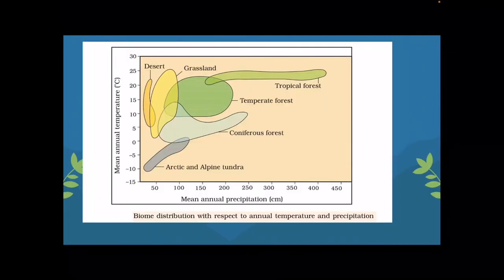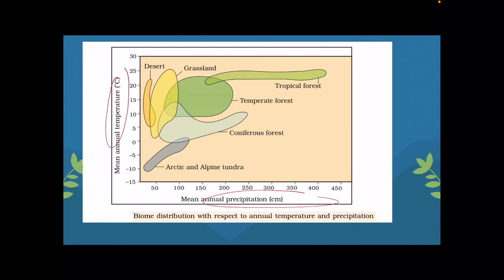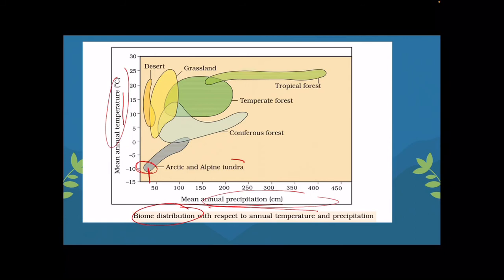Now let's delve into biome distribution. When we draw annual temperature on the y-axis and mean annual precipitation on the x-axis, at the lowest temperature and lowest precipitation we see arctic and alpine tundra. This biome spans approximately minus 10 degrees Celsius to 2.5 degrees Celsius, with very little precipitation.